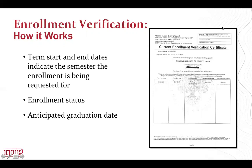Another nice feature on this form, in the top right-hand corner, is a place where you can put the policyholder's name and a group ID. A lot of times the insurance company needs to have the policy number to find the person in their database.